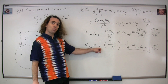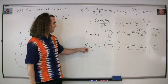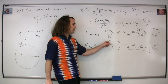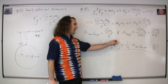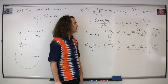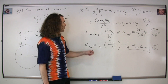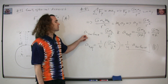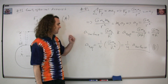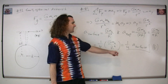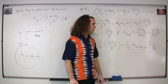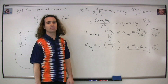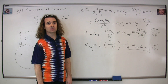Therefore, we can pull out the 1/4 and get that the acceleration at the top is equal to 1/4 times big G times the mass of the asteroid divided by r squared, which is the acceleration on the surface of the asteroid. Therefore, the acceleration at the top is equal to 1/4 of the acceleration on the surface of the asteroid. The correct answer is D.